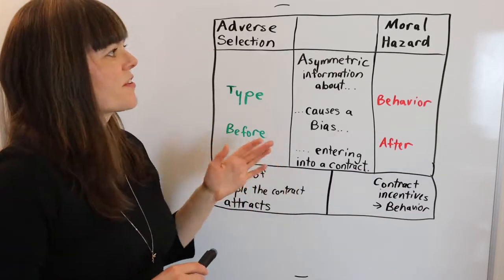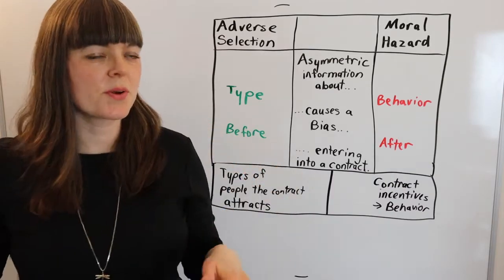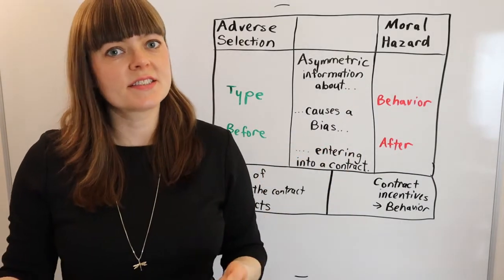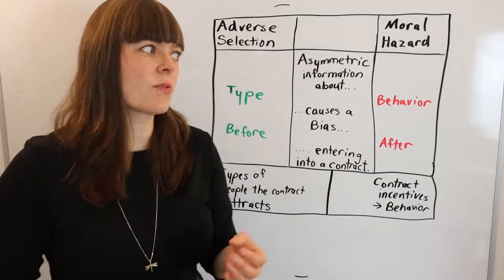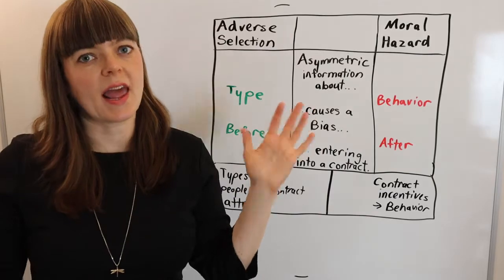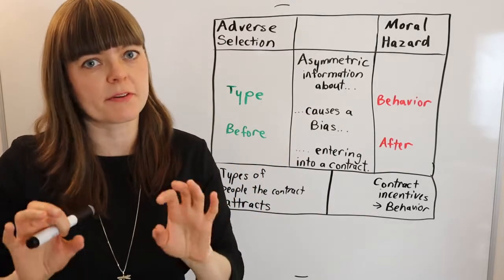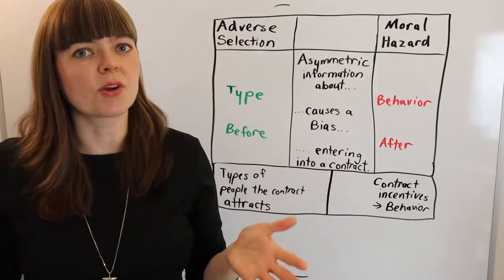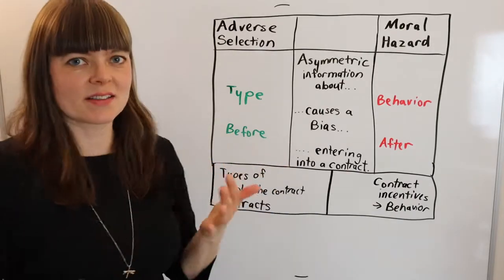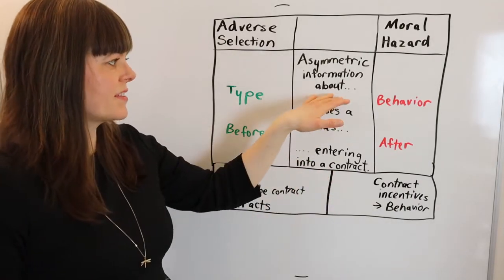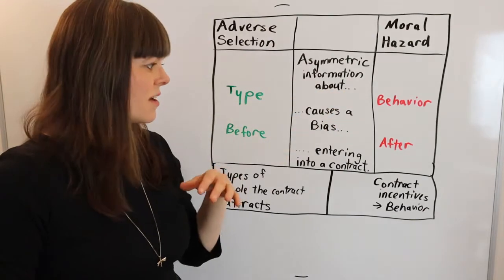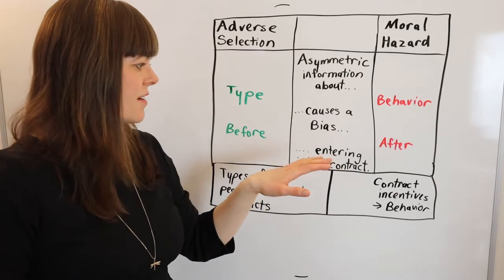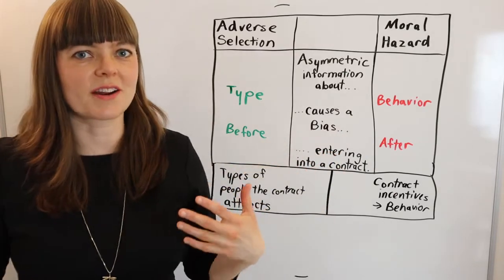In this video I'm going over the difference between adverse selection and moral hazard. These are often discussed together, and there's good reason for that. One reason is oftentimes they happen together — the same type of contract will be associated with both. They also have some things in common: they're both about asymmetric information, they both involve a bias that happens, and they're both about entering into a contract.